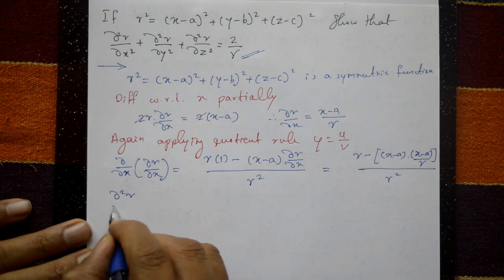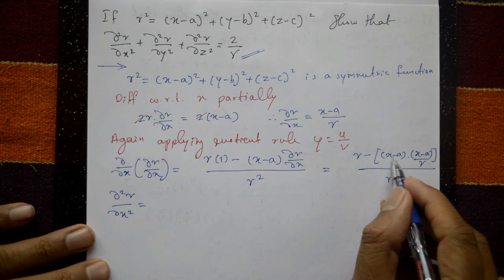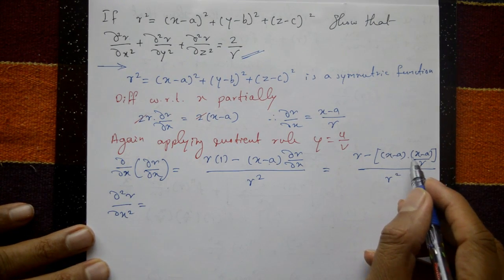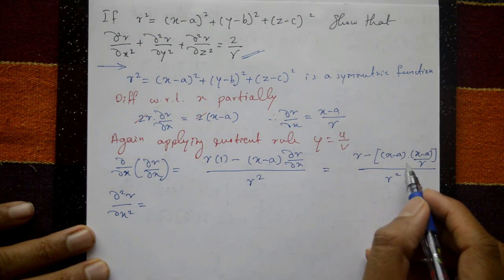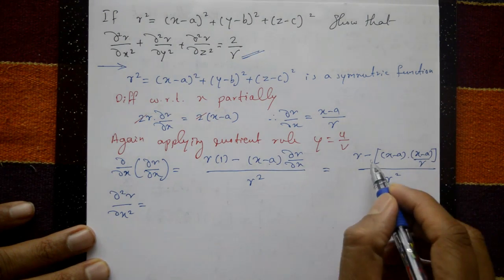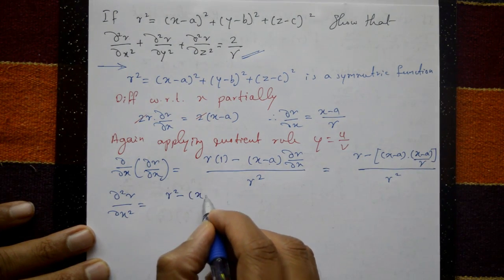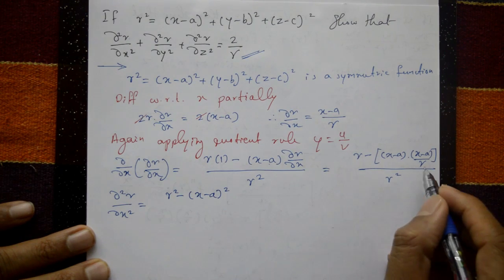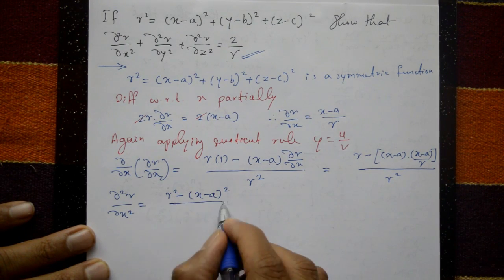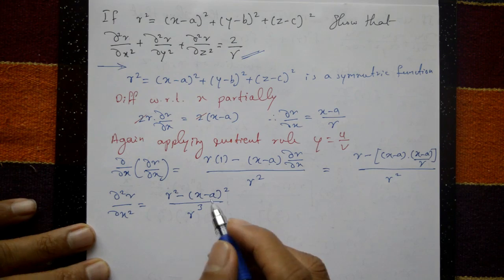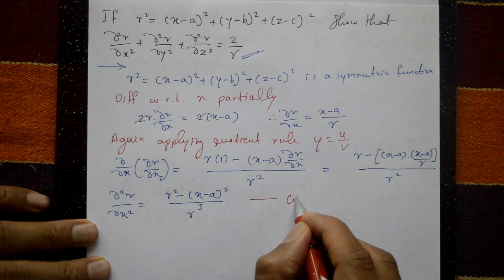Simplifying: ∂²r/∂x² = [r² - (x - a)²] / r³. Taking r² as the common denominator gives r² - (x - a)², divided by r³. This is equation number one.